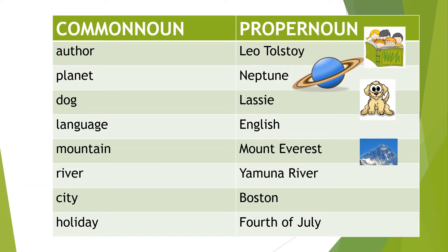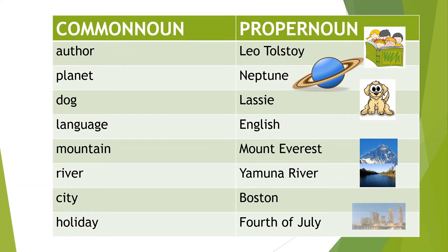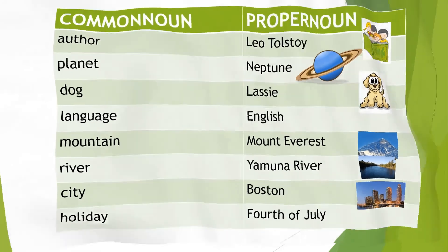River is a common noun, Yaman River is a proper noun. City is a common noun, Boston is a proper noun. Holiday is a common noun, Fourth of July is a proper noun.